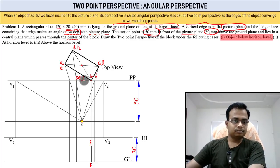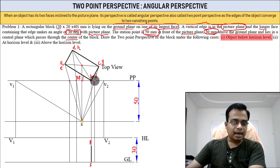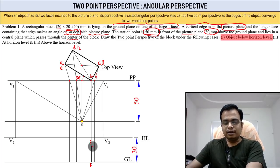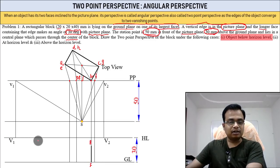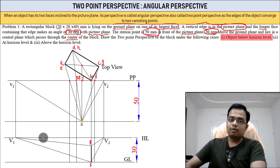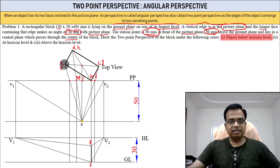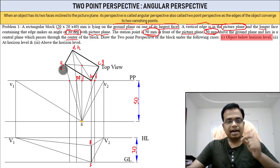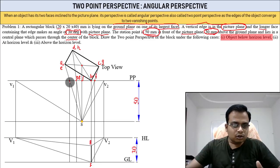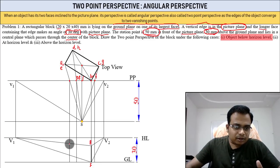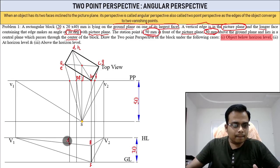Now join B with V2, F with V2, B with V1, and F with V1. As for this vertical edge — A is at the top and E is at the bottom — we locate A and E in the perspective.